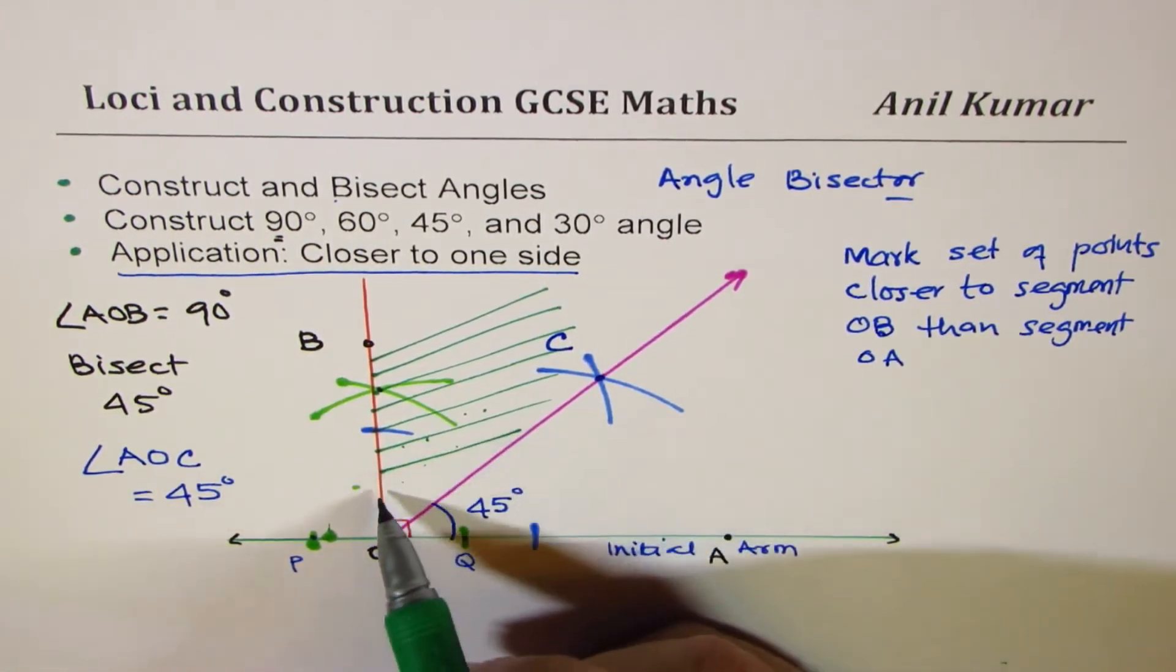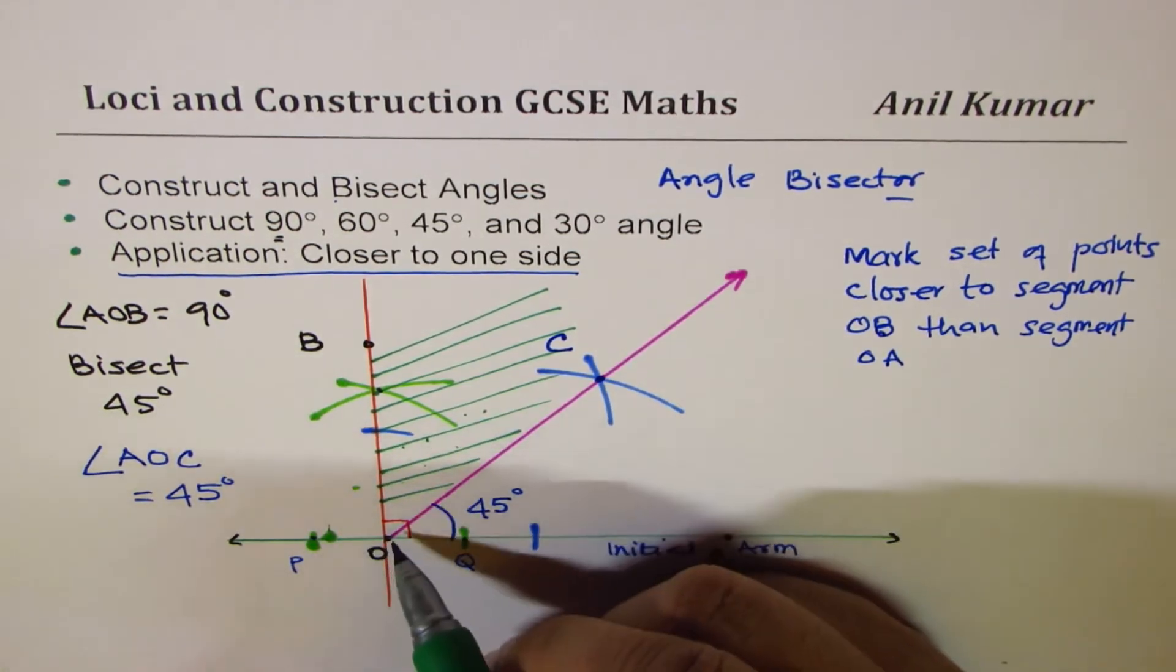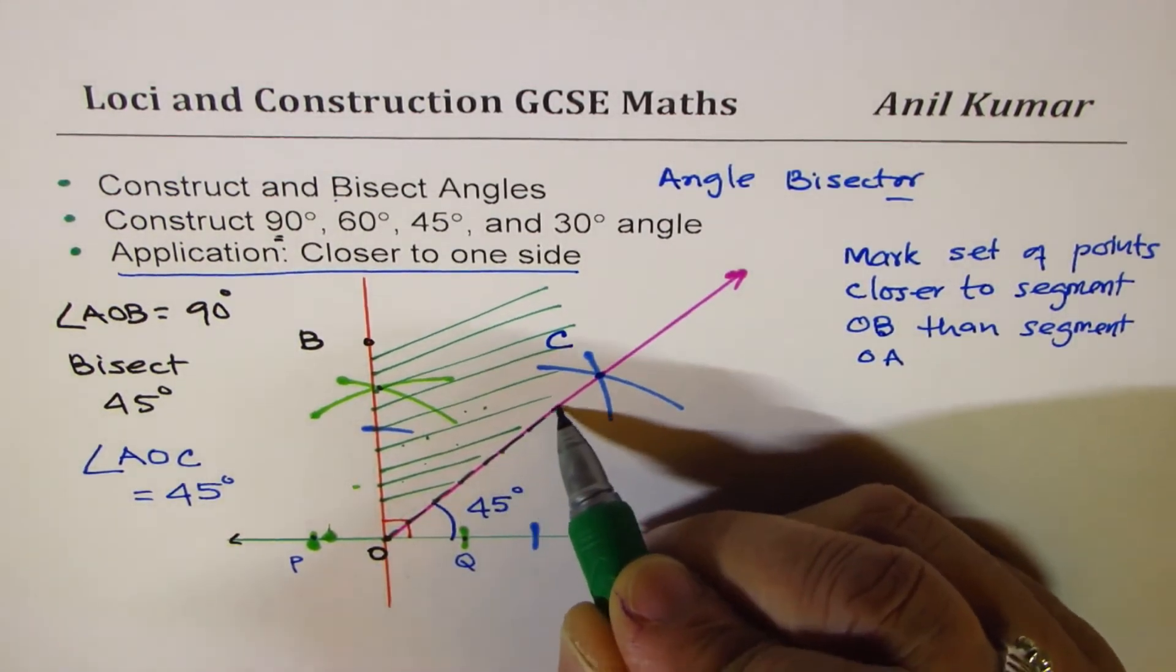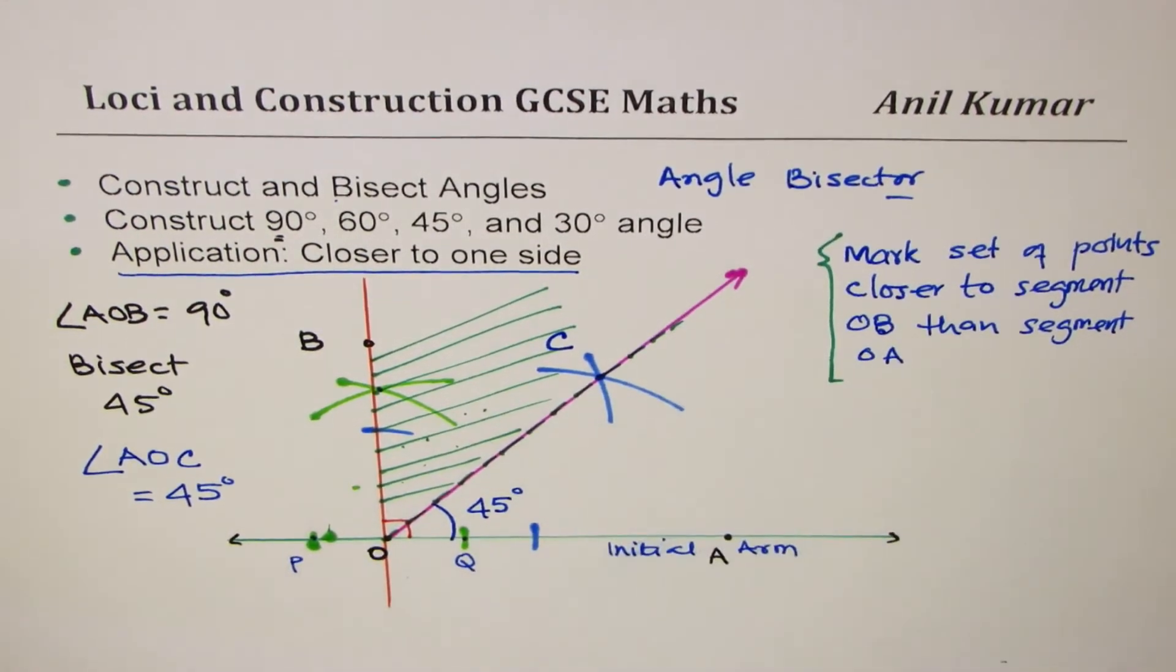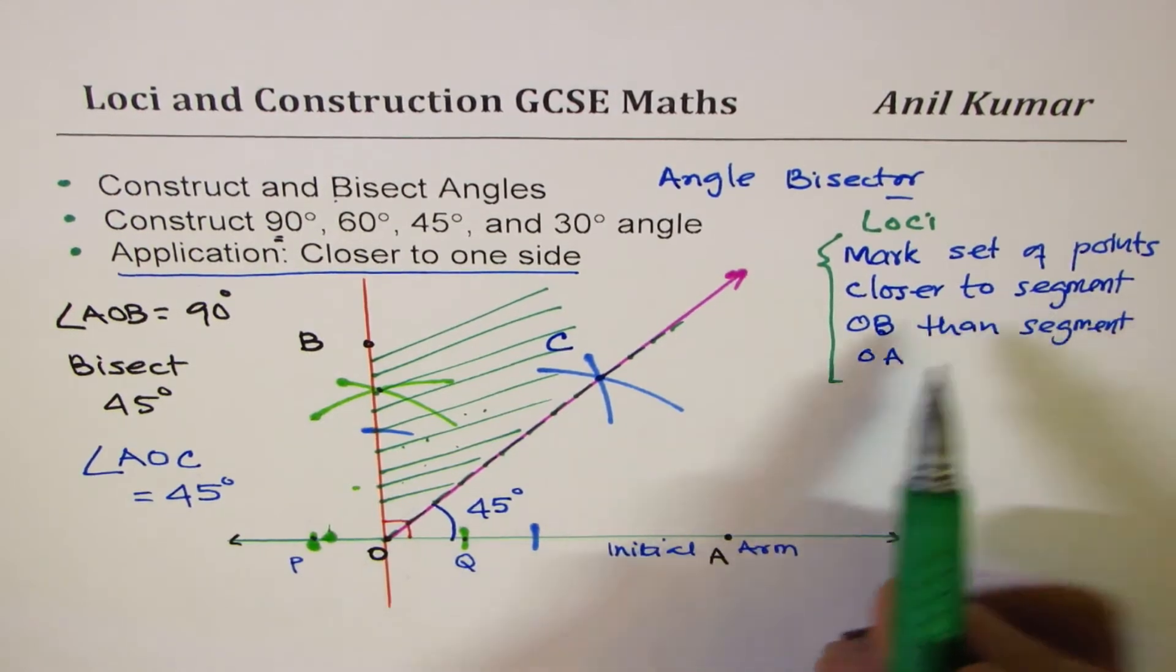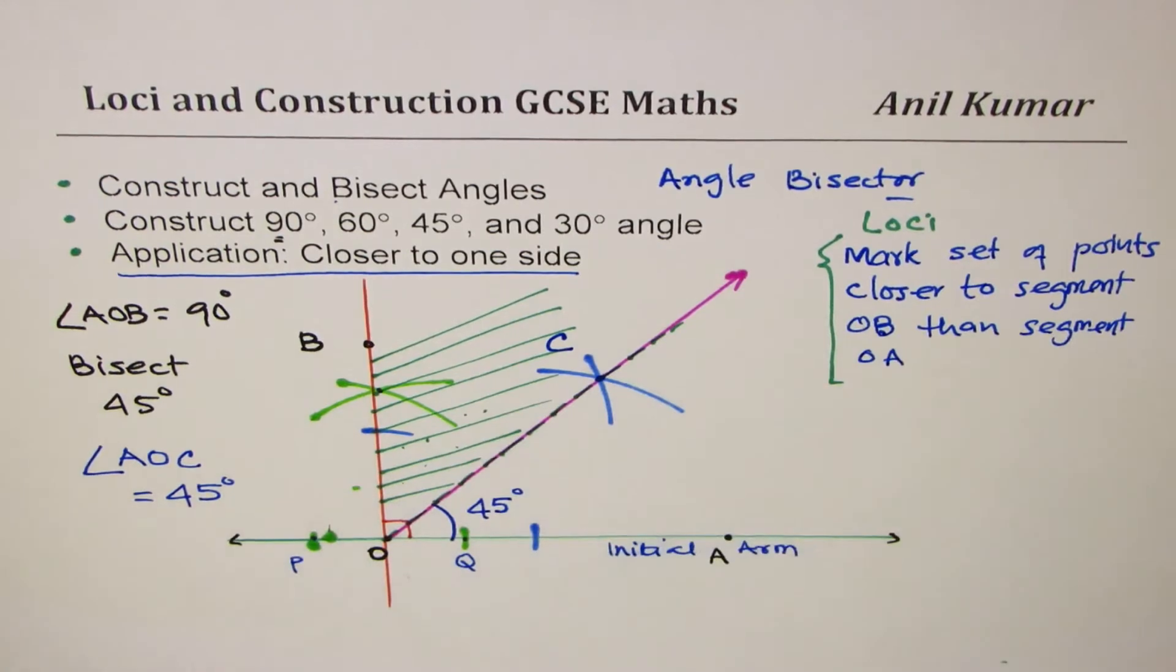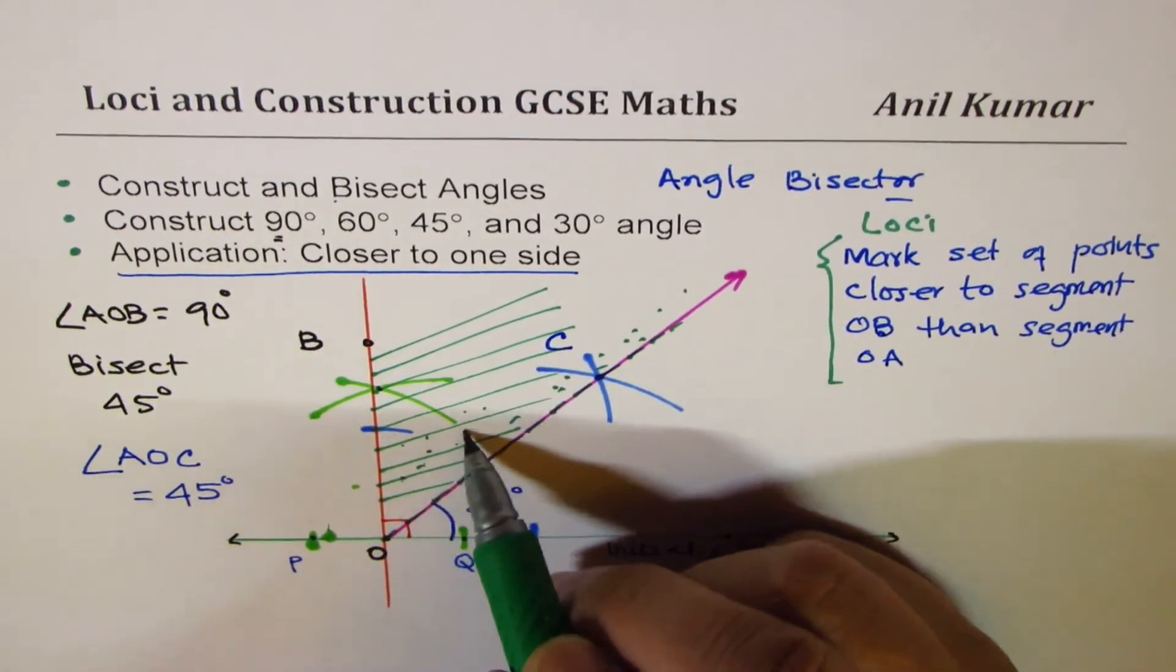Now when you mark it, it should not touch this line. Another way is what we do. We just draw a dotted line here. Dotted line means not including. So if the exercise is this, that is mark set of points closer to segment OB or loci, that is what it means, closer to OB than OA, then draw a dotted line on your angle bisector and mark everything above it.